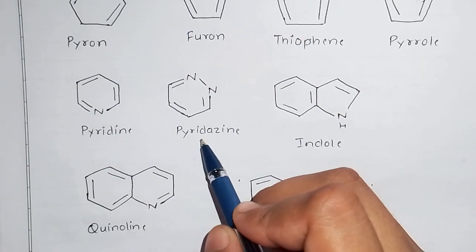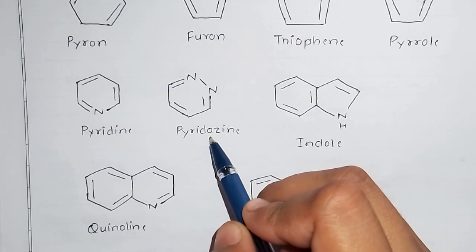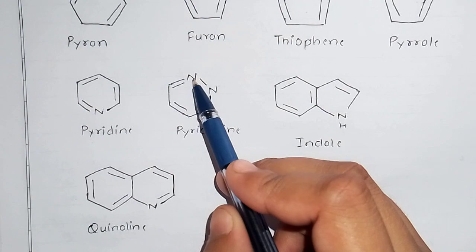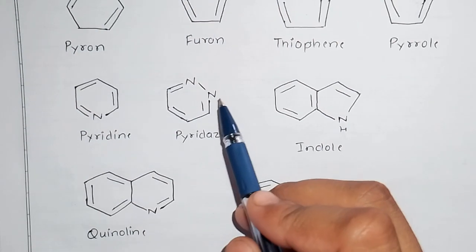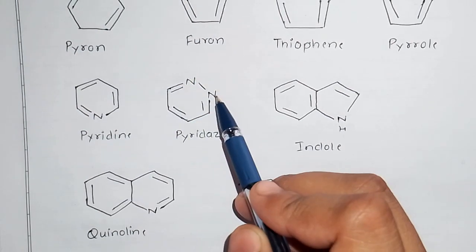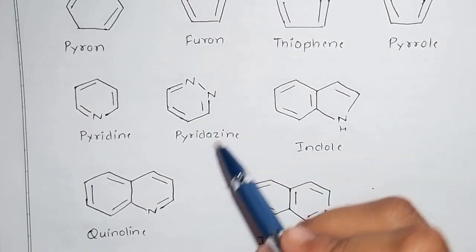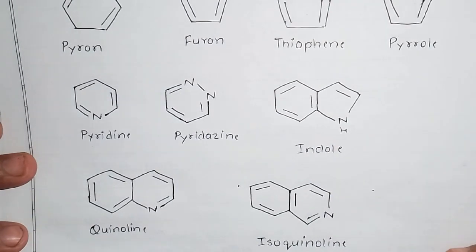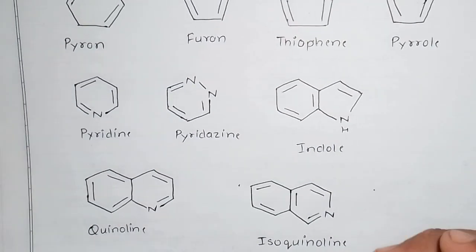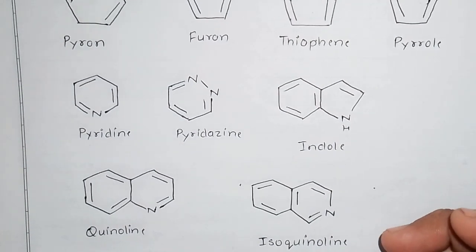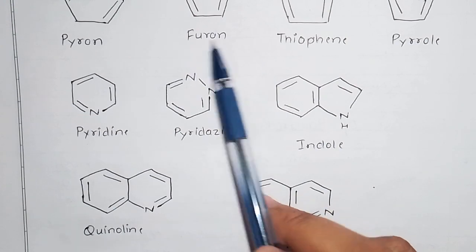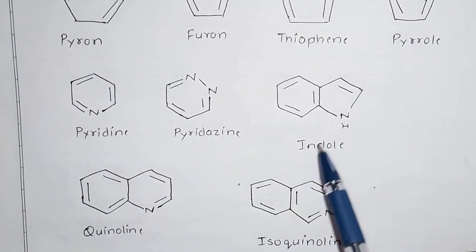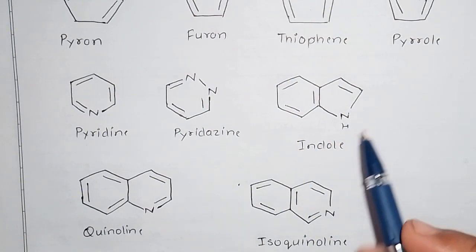Next we have pyrazine. Pyrazine has two nitrogen-containing atoms in the ring. This is very important. Next we have indole — the indole structure is very important. So to summarize: furan, thiophene, pyrrole, indole, quinoline, and isoquinoline are the key common names.